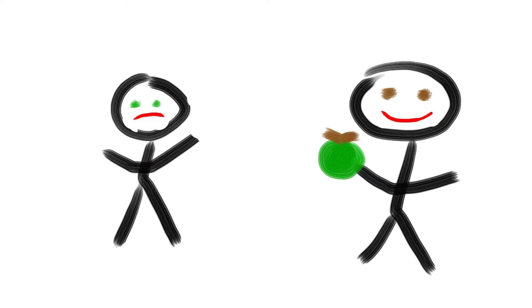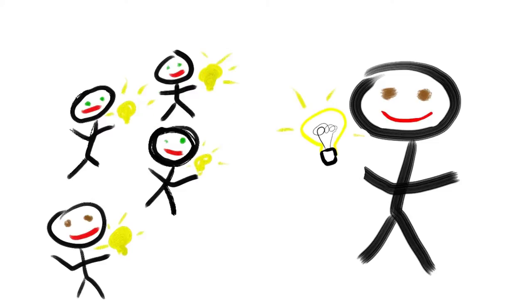We say that an apple is excludable because if I have an apple, I can stop you from taking it. We say that it's rival because if I give you my apple, I no longer have an apple. Ideas, on the other hand, are both non-excludable and non-rival. Normally, I can't stop you from copying my idea. But even if you do copy it, it doesn't leave me worse off. We call it non-rival because your use of an idea doesn't interfere with my enjoyment or my use. So ideas are what we call public goods.